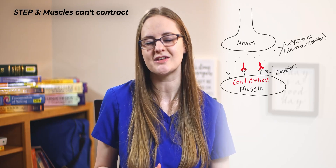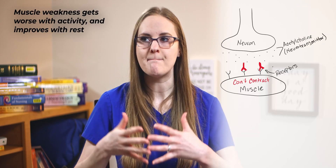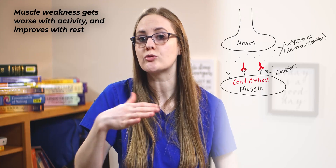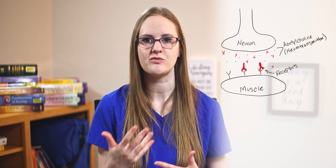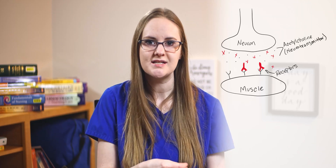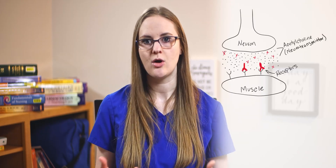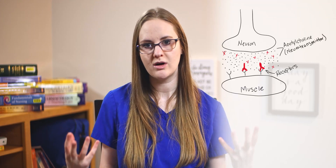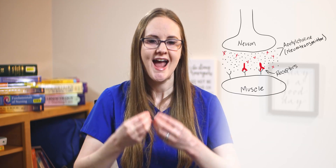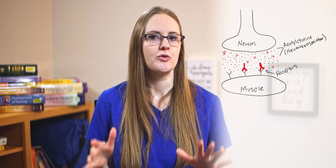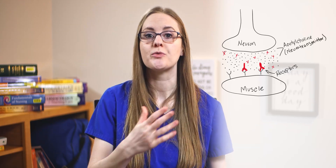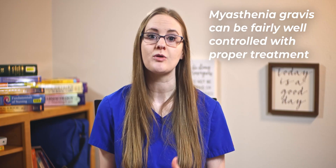One of the hallmark signs of myasthenia gravis is that muscle weakness gets worse with activity and then improves with rest. Weakness tends to worsen with repetitive movements and activity as more and more acetylcholine is blocked and then naturally broken down over time. With rest, muscle contractions can improve because rest allows more acetylcholine to build up at the neuromuscular junction and flood more of those receptors. The main concern is when the respiratory muscles are compromised and can't contract like they should, which can lead to respiratory failure.